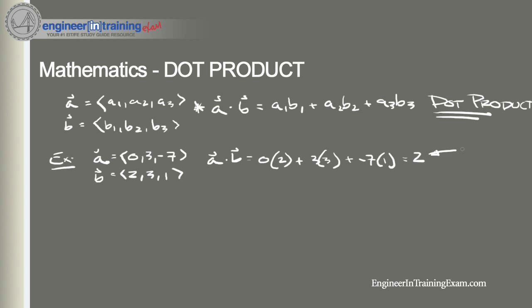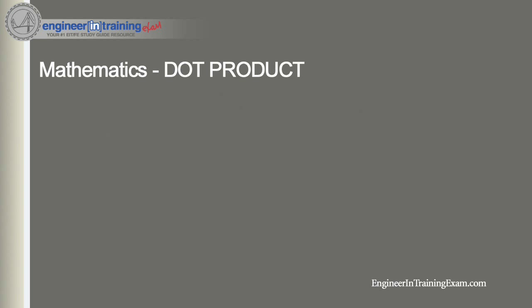As you can see, the result of a dot product is a scalar — it's a single number. Remember that.